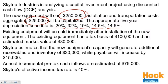Existing equipment will be sold immediately after installation of the new equipment. The existing equipment has a tax basis of $100,000 and an estimated market value of $80,000. Skytop estimates that the new equipment's capacity will generate additional receivables and inventory of $30,000, while payables will increase by $15,000. Annual incremental pre-tax cash inflows are estimated at $75,000, and Skytop's effective income tax rate is 40%. That's the information we'll have for all three questions.